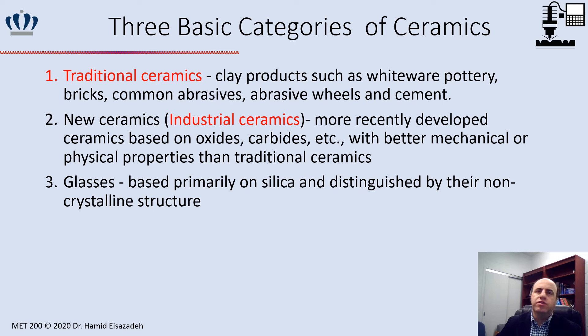There are three different categories of ceramic. The first is traditional ceramic, which includes clay products such as whiteware, pottery, brick, abrasive wheels, and cement. The second is new or industrial ceramic, mostly based on oxides and carbides, which have better mechanical and physical properties compared with traditional ceramics. The third category is glasses, which are distinguished from ceramics because of their non-crystalline structure.